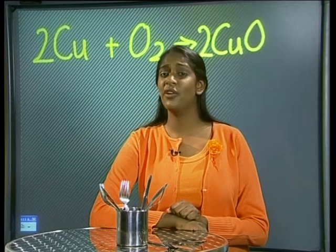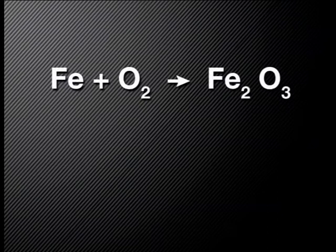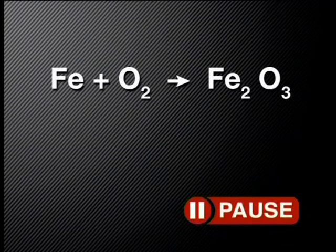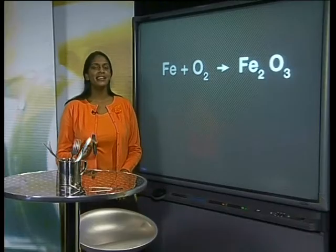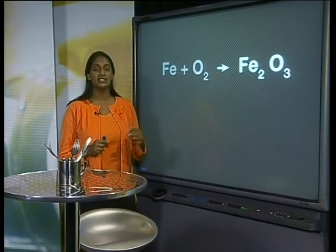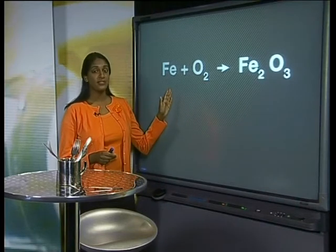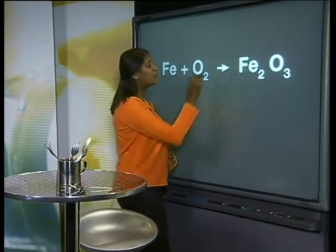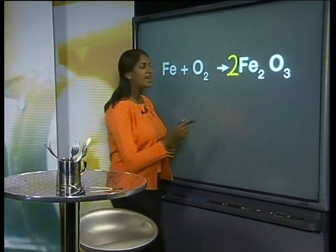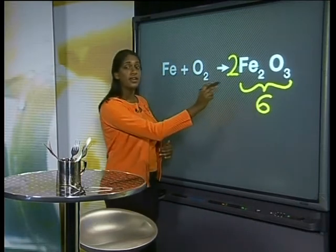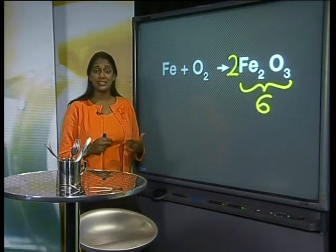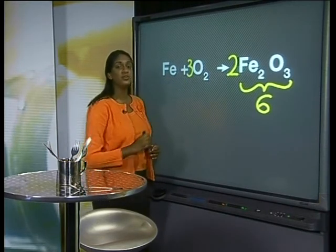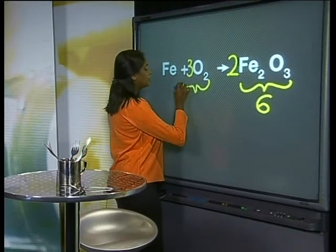Iron bonds with oxygen in a very different manner. The unbalanced chemical equation for the reaction is: Fe + O₂ → Fe₂O₃. Why don't you try and balance this equation now? Here is a tip: when you have an even number of atoms on the left and an odd number on the right, multiply the odd number by 2. So I write a 2 in front of Fe₂O₃. This means I have 6 oxygen atoms on the right and only 2 on the left. To balance this, I write a 3 in front of O₂, since 3 times 2 is also 6.